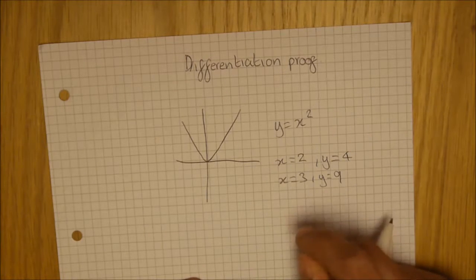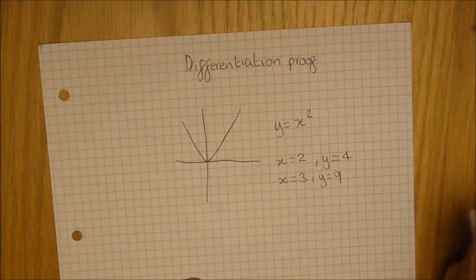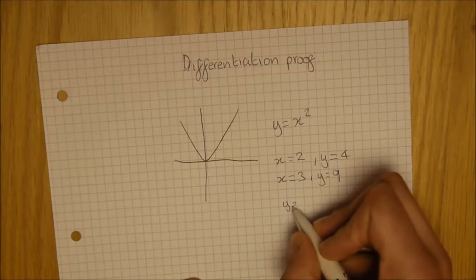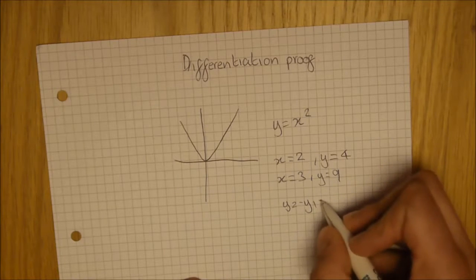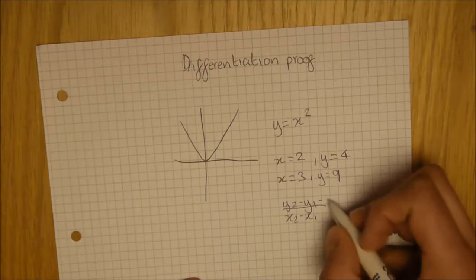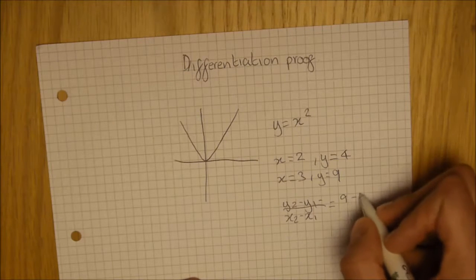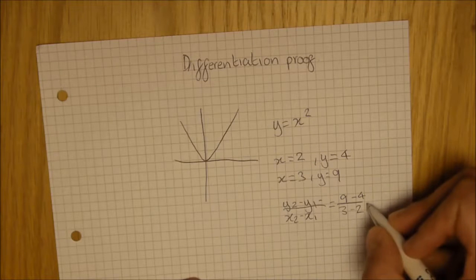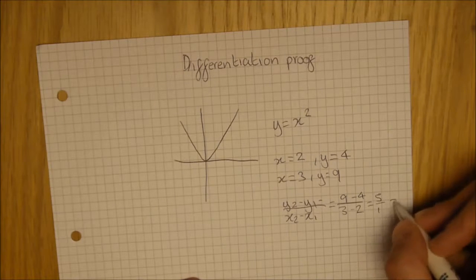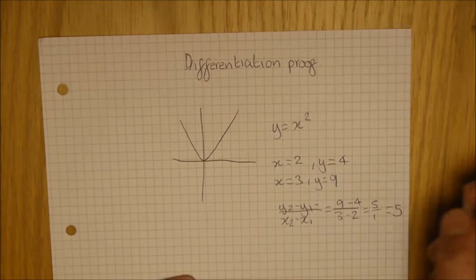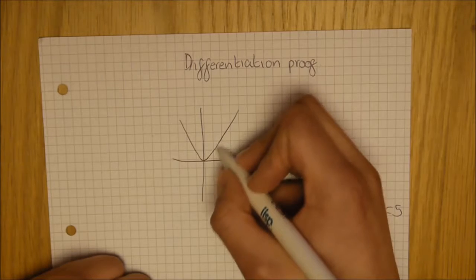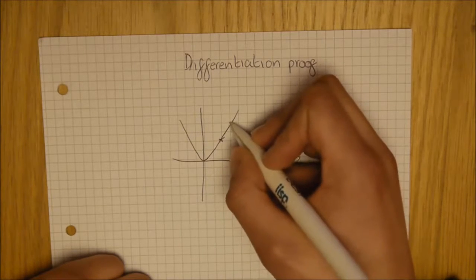Now, to work out the gradient of this line, you would do y2 minus y1 over x2 minus x1. So we get 9 minus 4 over 3 minus 2, which equals 5 over 1 equals 5. So that would be the gradient of between 2 and 3.